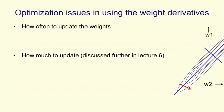So optimization issues are about how you use the weight derivatives. The first question is how often should you update the weights? We could try updating the weights after each training case. So you compute the error derivatives on a training case using backpropagation, and then you make a small change to the weights. Obviously this is going to zigzag around because on each training case you'll get different error derivatives. But on average, if we make the weight changes small enough, it'll go in the right direction.